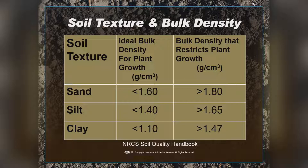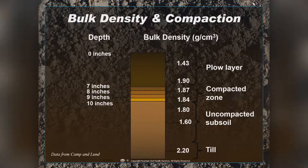This comes from the NRCS Soil Quality Handbook. We're looking at bulk density and compaction, and you can still see the plow pan from about 50 to 60 years ago. We used to plow the soil 6 to 8 inches deep, and right around 7 inches, the bulk density goes from 1.43 in the top 6 inches down to about 1.9. When we plow, we're smearing the wet soil, making it very compacted, so roots have a very difficult time getting through that layer. In a clay soil, anytime you're above 1.4 to 1.47, roots won't be able to penetrate that compacted layer.